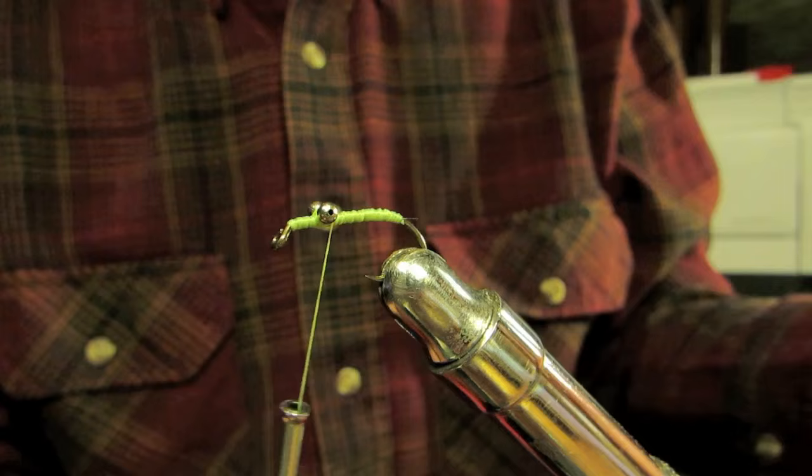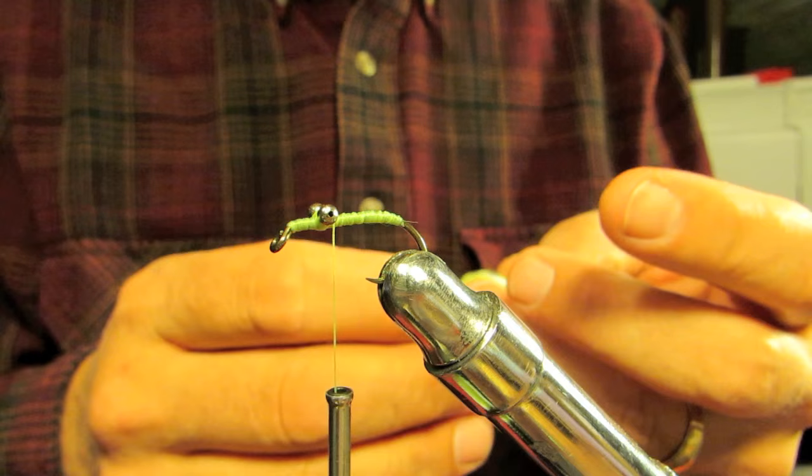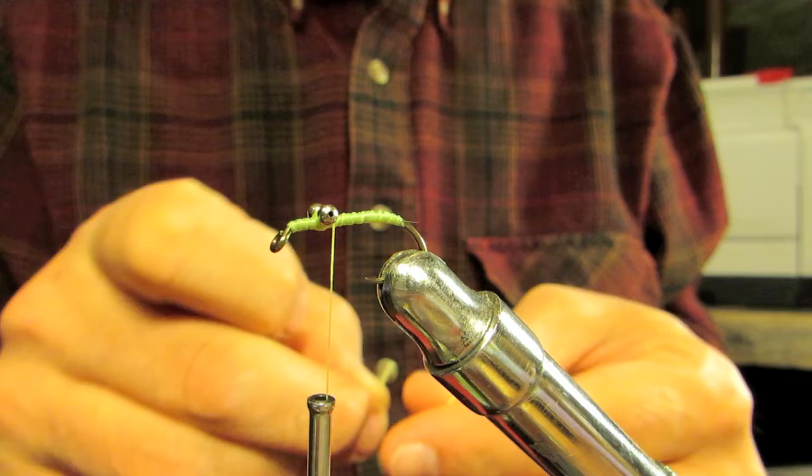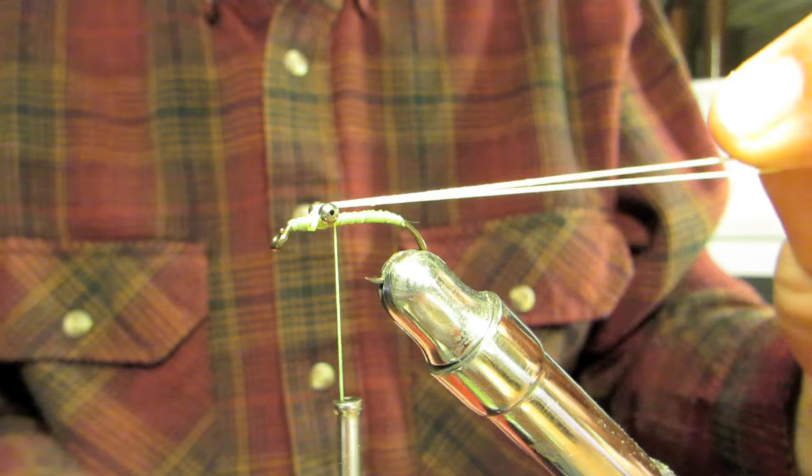Once I've done that, I want to get a single strand of spinnerbait skirt. See that stuff? That's what they use on spinnerbaits. I'm going to pull a single strand of chartreuse. Just like this. I'm going to take it in half, put it in half, catch it over the fly.